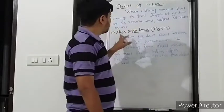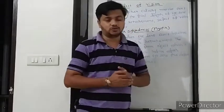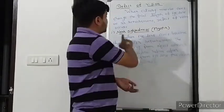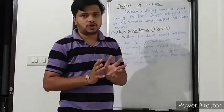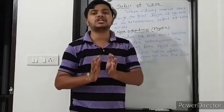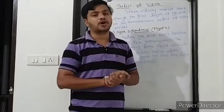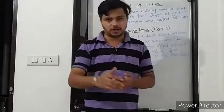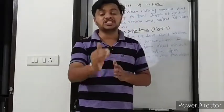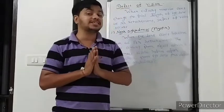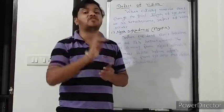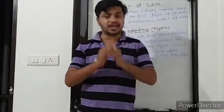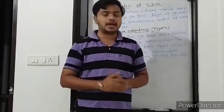Today our topic is nearsightedness. As its name suggests, it is a defect of vision where you can't see an object which is far from you — because it is nearsightedness. You have sight only for near objects. You can see objects which are near to you, but you can't see clearly what is far from you. To see a far object, the focal length of the lens should be high.